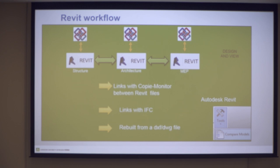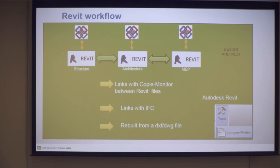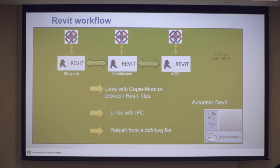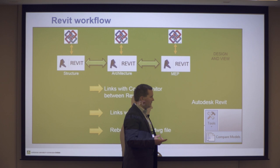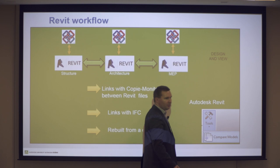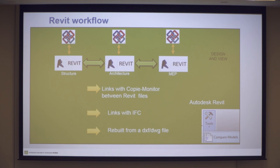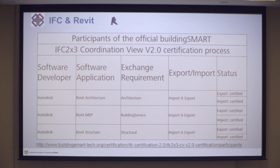When you do copy-monitor, you will have slab, column, wall, level, and grid. If you want an overview of everything that has been changed between two versions of the architecture file, there is a Revit extension tool done by Autodesk. There is a compare model tool which will compare exactly the two Revit files and give you all categories that are different — which is new, which is different, which has been created.